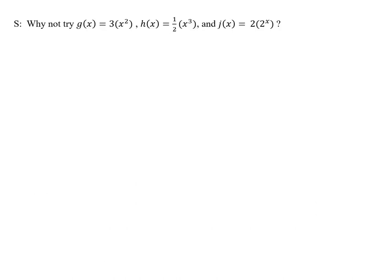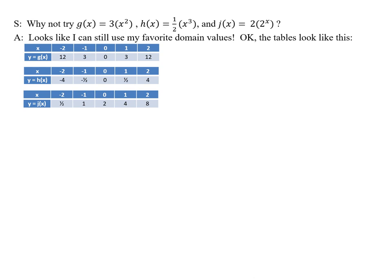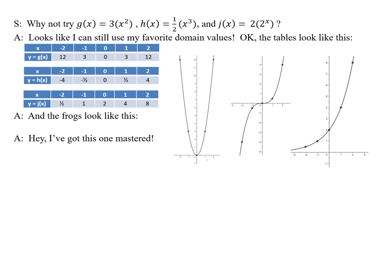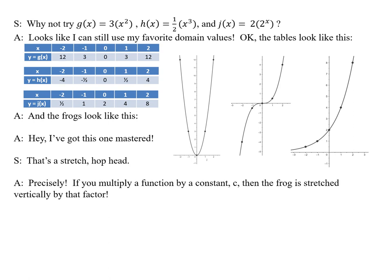Why not try g(x) = 3x², h(x) = (1/2)x³, and g(x) = 2·2^x. Looks like I can still use my favorite domain values. Okay, the tables look like this. And the frogs look like this. Hey, I've got this one mastered. That's a stretch, Hophead. Precisely. If you multiply a function by a constant c, then the frog is stretched vertically by that factor.